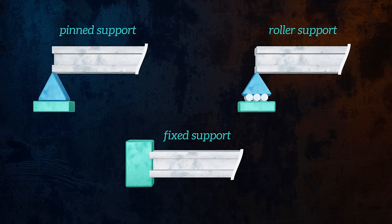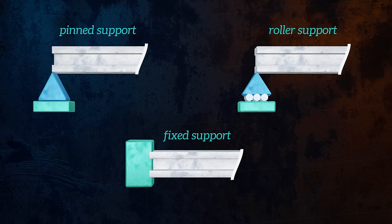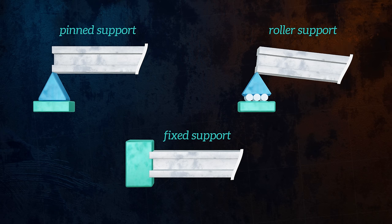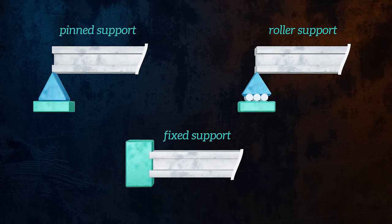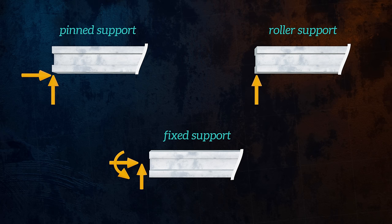Pin supports prevent vertical and horizontal displacements but allow rotation. Roller supports prevent vertical displacements but allow horizontal displacement and rotation. Fixed supports prevent all displacements and rotation. If a certain degree of freedom is restrained at a support, we will have a corresponding reaction force or reaction moment at that location. For example, rotations are permitted for a pin support, so there is no reaction moment, but displacements in the vertical and horizontal directions are prevented, so we will have horizontal and vertical reaction forces.